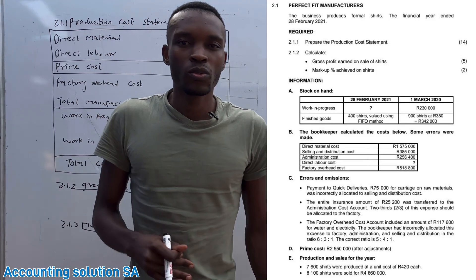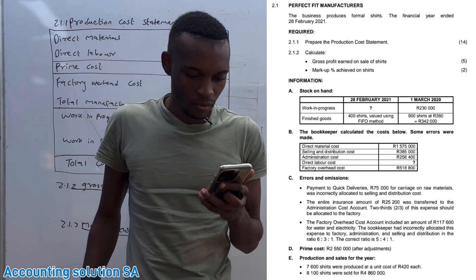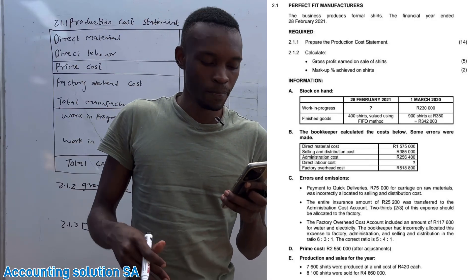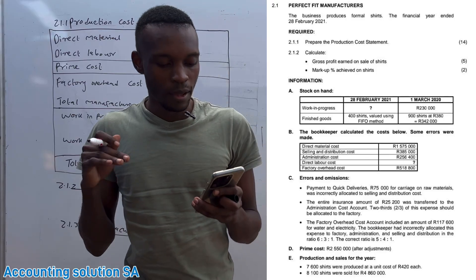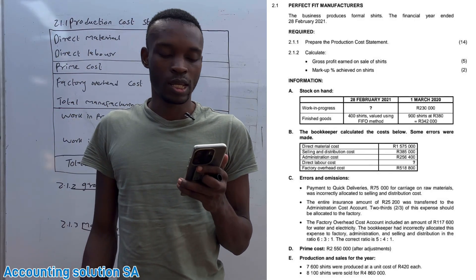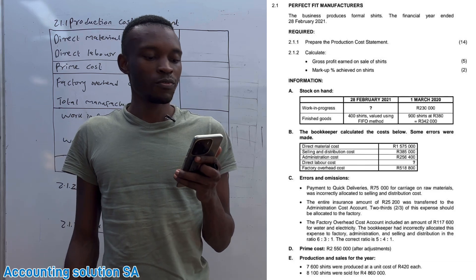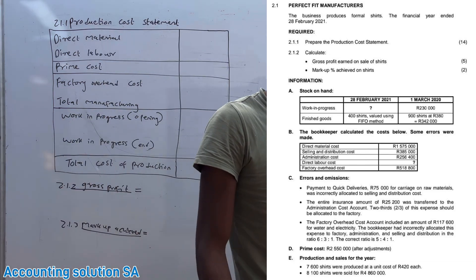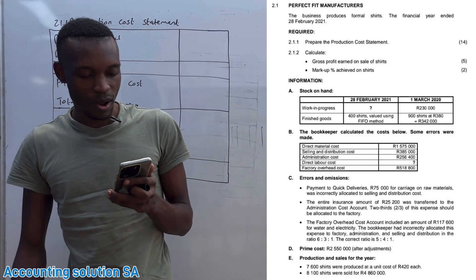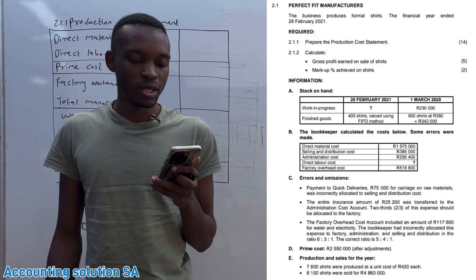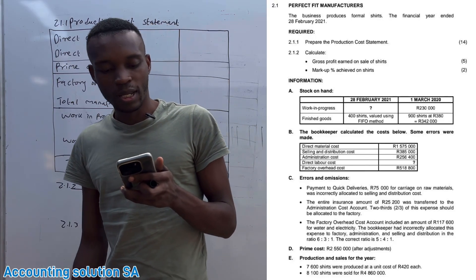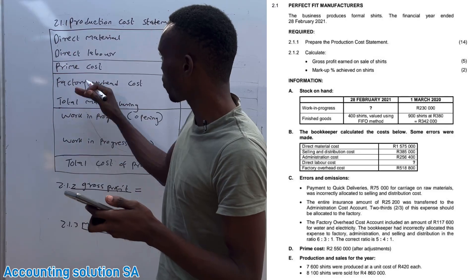In this video we are going to do a manufacturing question. I picked one from a previous question paper — November 2020. This question is also suitable for June examination preparation. It's cost accounting, which we also know as manufacturing. The question asks us to prepare a production cost statement, and also to calculate gross profit and markup.